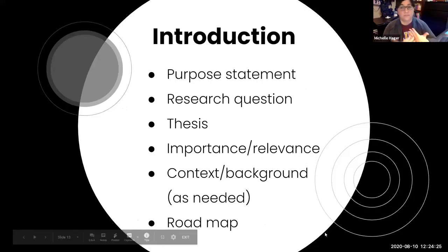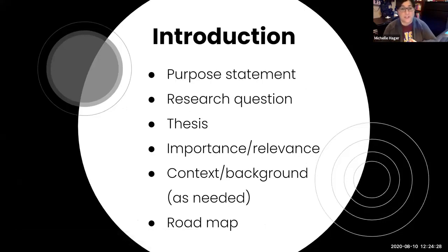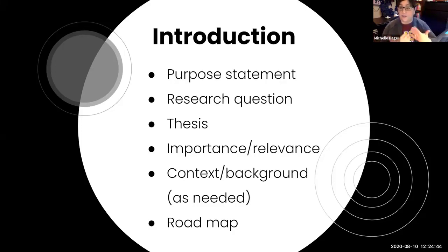Next up: introductions. In undergrad papers, you probably had some form of an introduction. In grad papers, you're going to have a purpose statement — what are you doing here? You are always going to be addressing some sort of research question, and we'll talk more about research questions a bit later. You're still going to have a thesis, which is the main point of the paper. You need to demonstrate importance, relevance, and the 'so what.' Provide any context or background necessary for your reader, and your intro provides a roadmap for the entirety of your paper.